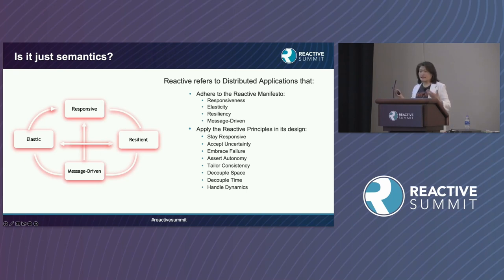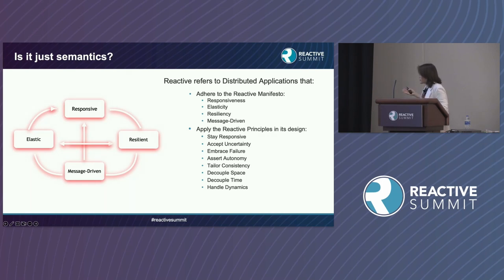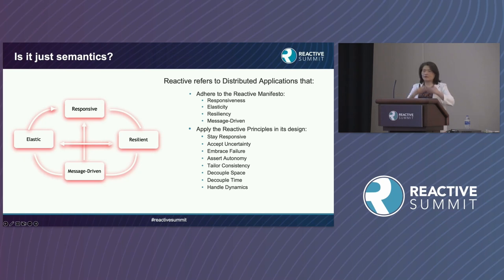We also need to accept uncertainty. The reactive way of doing things is asynchronous by nature — it decouples space and time. There can be uncertainty, network failures; we cannot assume the network is always up. We need to assert autonomy and tailor consistency. What I like is that we are really decoupling space and time, making the style of programming and design very asynchronous in nature.